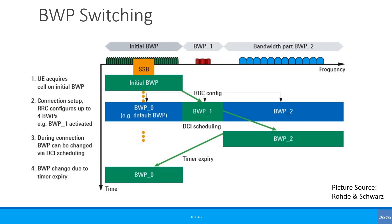The DCI scheduling procedure for a bandwidth part change may also be used for numerology change by scheduling radio resources to fulfill different QoS requests — for example, a change from URLLC to eMBB data scenario. A BWP inactivity timer is started by the network; this timer can take a value from 2 milliseconds to 2 seconds. When this timer expires, the UE goes back to the default bandwidth part. This is a very useful mechanism as it means there is no need for additional signaling from the network for changing the BWP to default.